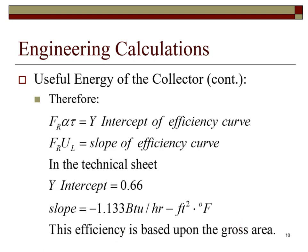The F sub R absorptivity transmissivity is equal to the Y intercept and the F sub R U sub L is equal to the slope of the efficiency curve. In the technical sheet given above, the Y intercept is 0.66 and the slope is minus 1.133.